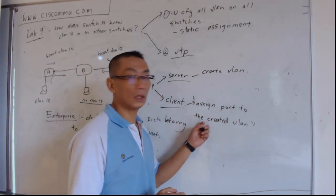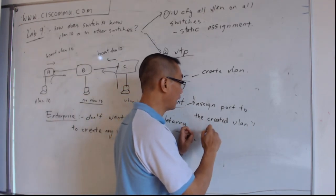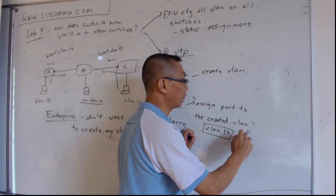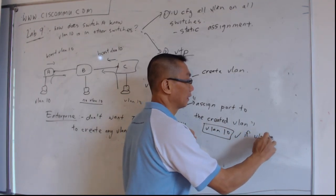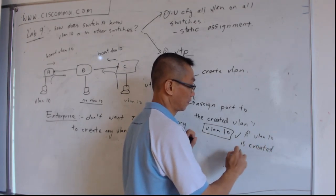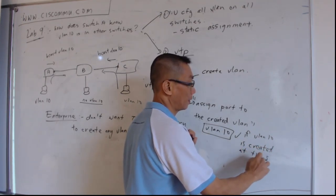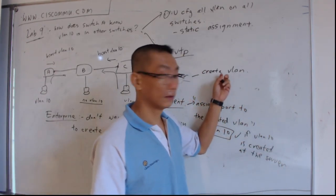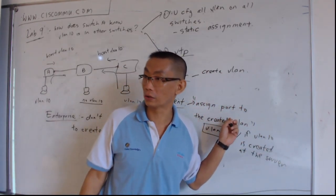Let's say you want to assign to VLAN 10. VLAN 10 will only be successful if VLAN 10 is created at the server. If it's not created, then you cannot assign the port to a particular VLAN.